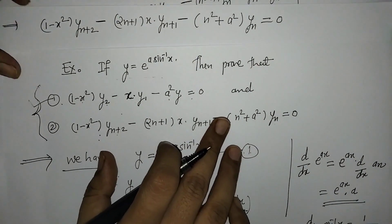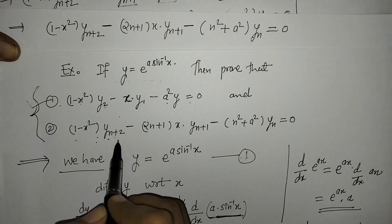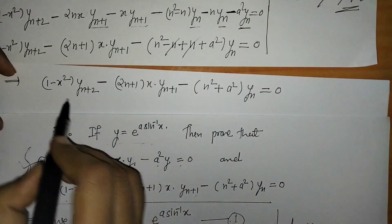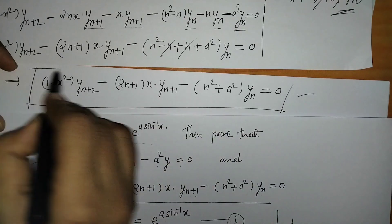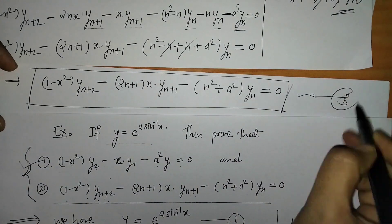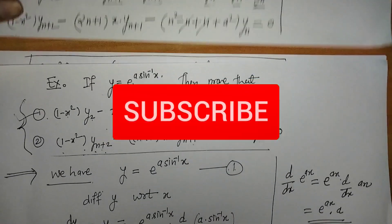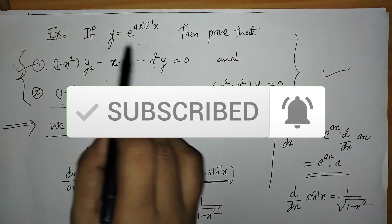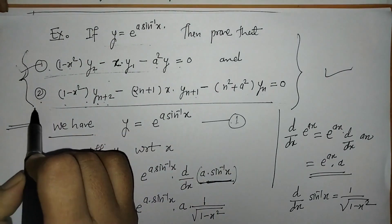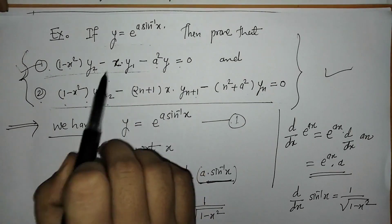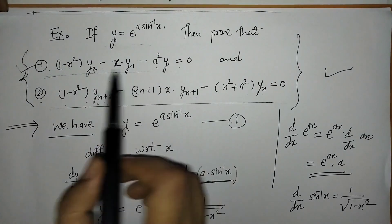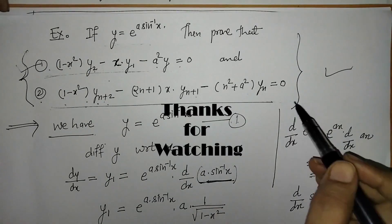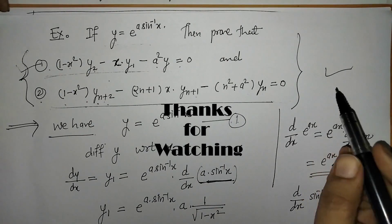We check what we wanted in the second expression: (1−x²)·yn+2 minus (2n+1)·x·yn+1 minus (n²−a²)·yn equals zero. This matches the required second expression exactly. So in this way, by differentiating once and twice to get the first expression, and then applying the Leibniz theorem to it, we get the second expression. That's it for now — see you in the next video, thank you, keep watching.